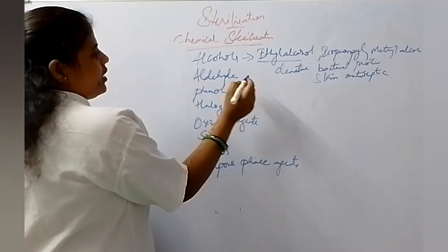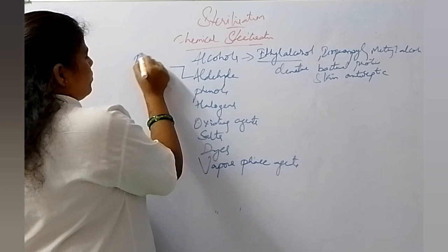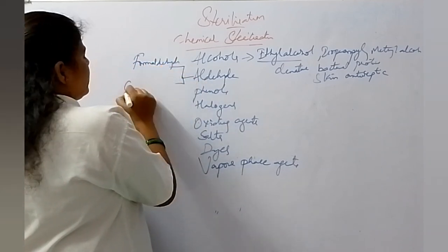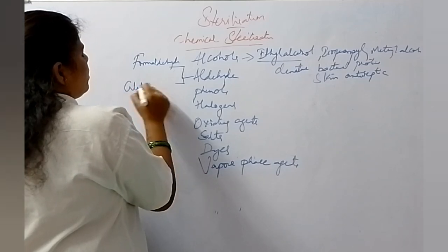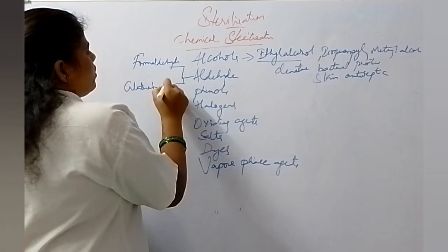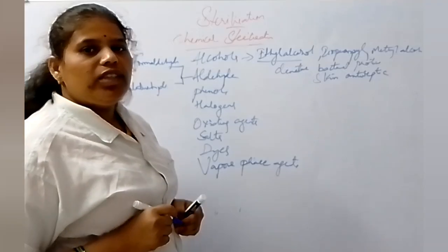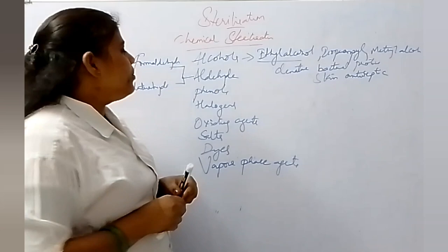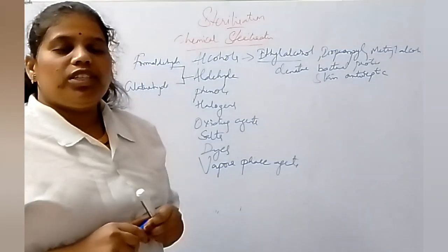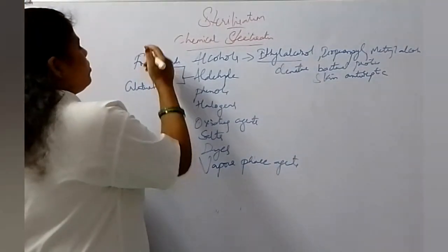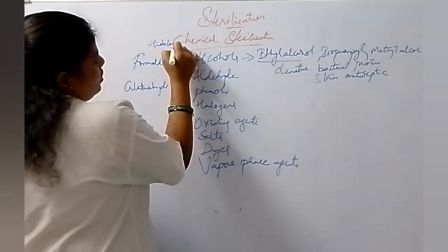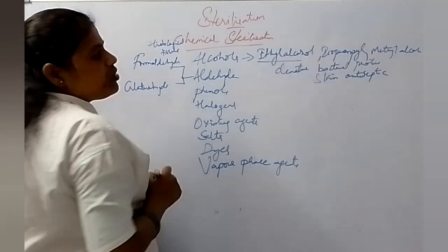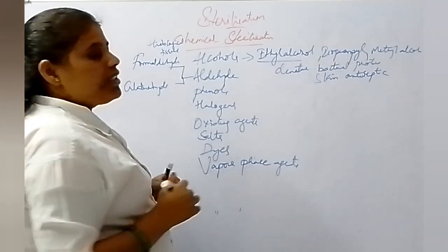We have two types of aldehyde: formaldehyde and glutaraldehyde. Aldehydes have bactericidal and virucidal activity. Formaldehyde is used for the preservation of histological tissue and also for the preparation of bacterial vaccines.